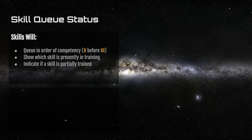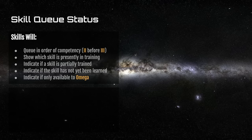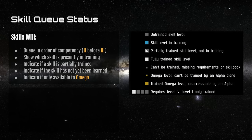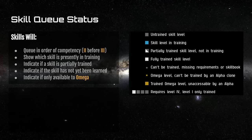The skill queue also indicates via a countdown whether training has been paused and where it left off. Untrained skills show up as gray, currently training skills show up blue, and partially trained skills are indicated with a partially trained block and a countdown to completion. If a skill hasn't been injected yet, you won't be able to train it and it shows as a small square. Skills blocked by clone status or missing skill books show as small or large yellow blocks. If a skill's requirement has not yet been met, it shows how many levels of that prerequisite you've trained.